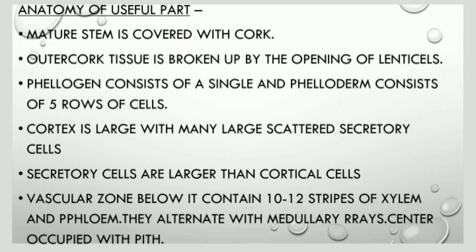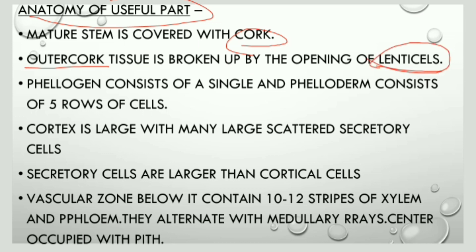Now let us discuss about the anatomy of the useful part, that is the anatomy of the mature stem. The mature stem is covered with a cork and the outer tissue is broken up by the openings of lenticels — that is, the outer cork tissue has lenticels. The phellogen consists of a single row of cells and phelloderm consists of five rows of cells. The cortex is large and has many secretory cells which are scattered, and these secretory cells are larger than the cortical cells.